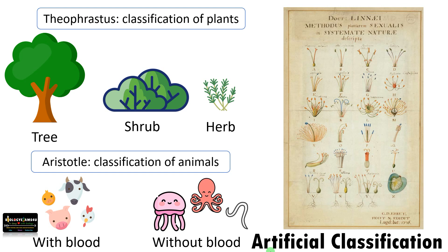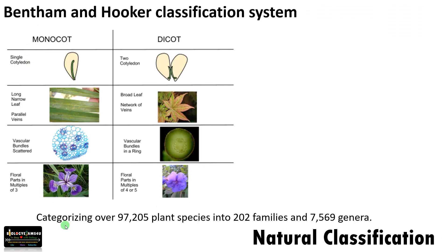The problem with this classification is it may not reflect the evolutionary relationship between organisms. Distant species may be placed in a common group. For example, cow and duck are unrelated organisms but are placed together in this classification.